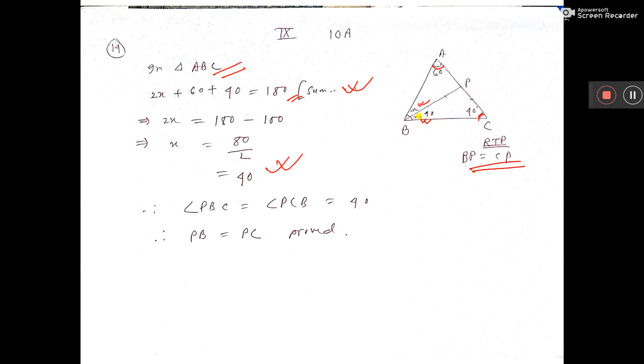So you are getting the value of X. Now, this is 40, this is also 40. So in triangle PBC, these two angles are equal. That means PC equal to PB. So it is proved.